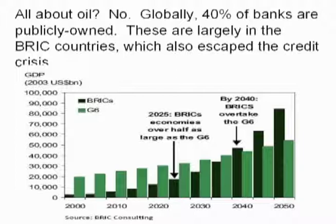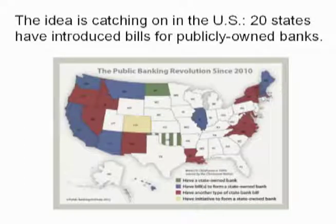Some people say North Dakota is an oil state and that explains its success, but there are other states with even more oil that aren't doing as well. Globally, 40% of banks are publicly owned — largely in the BRIC countries: Brazil, Russia, India, and China — all of which escaped the credit crisis and are doing remarkably well, growing 92% collectively in the last decade and due to overtake Western countries soon. We now have 20 states that have brought bills of one sort or another for publicly owned banks. We haven't won any yet, but we're in the second round — we now understand the opposition's arguments and know where we can come back strong.